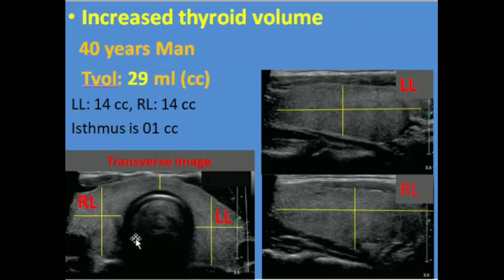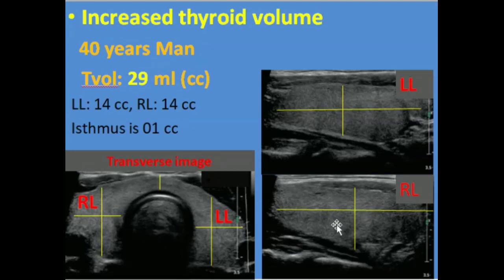If the isthmus is significantly enlarged, its volume is also added. In this image, the AP diameter, transverse diameter, and longitudinal diameter are measured and multiplied by 0.52. Each lobe was 14cc. Since the isthmus was also considerably enlarged, its volume was approximately 1cc, so the total volume of this thyroid is 29ml. Since the patient was male and the normal value for males is 25ml, this is mild diffuse goiter.